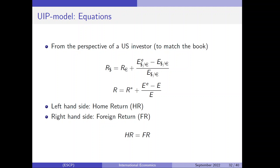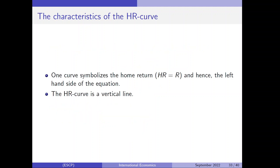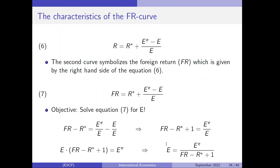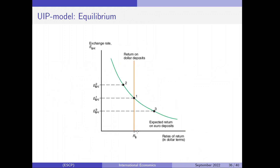The UIP condition can also be written as HR equals FR. Let's think about the characteristics of the HR curve. This curve symbolizes the home return and hence the left-hand side of this equation. The home return curve is a vertical line because it does not depend on the exchange rate, and we find the position of this orange curve by looking at the interest rate level — inserting this vertical line at a position representing 5% or 10% domestic interest.